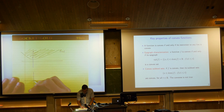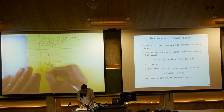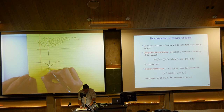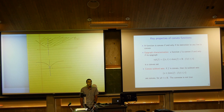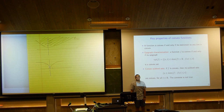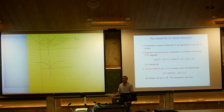We call functions with convex sublevel sets quasi-convex. Quasi-convexity is a weaker condition than convexity — a function can be quasi-convex with convex sublevel sets but need not be convex itself. If f is smooth, it's convex if and only if it lies above its tangent line everywhere: f(y) ≥ f(x) + ∇f(x)ᵀ(y - x) for all x and y.